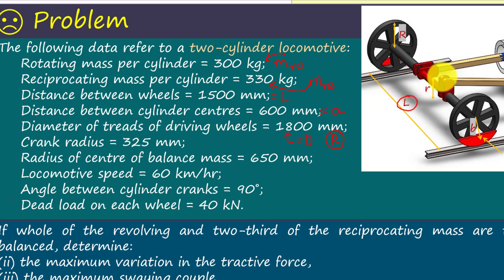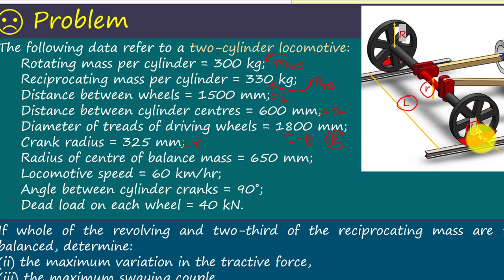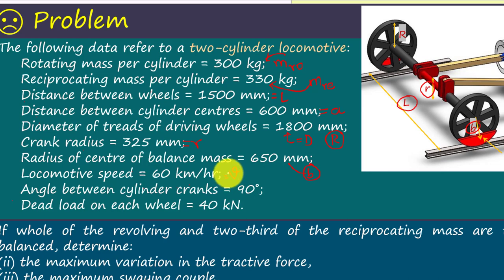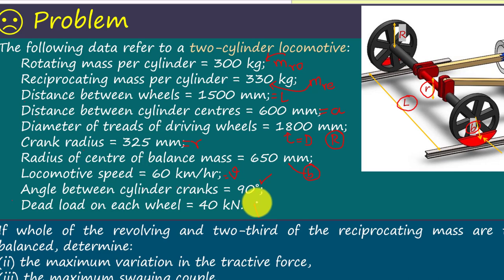Crank radius is given as small r. Radius of center of balance mass — this is the radius of rotation of the balancing mass — is small b. Locomotive speed V is given as 60 km per hour. Angle between cylinder cranks is 90 degrees. Dead load on each wheel — we represent the dead load as capital letter P. So these are the given data.